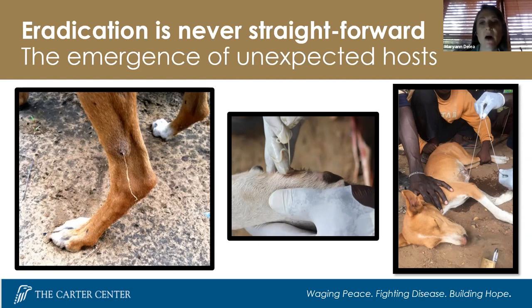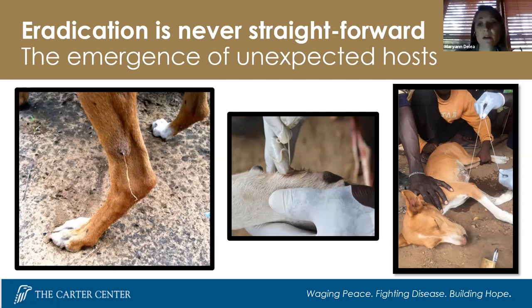The leading theory is that aquatic animals consume copepods carrying guinea worm larvae. When fish or other aquatic animals are prepared for consumption, their entrails are often removed and either fed directly to dogs or cats, or indiscriminately disposed of in open environments where dogs and cats can consume them — due to poor sanitation and hygiene conditions. With the identification of these novel hosts, the global and national guinea worm eradication programs considered new program interventions to interrupt these novel transmission pathways.